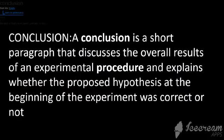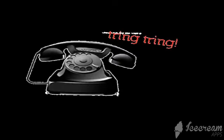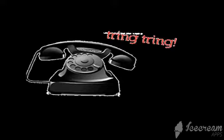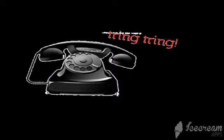The conclusion is the result. A conclusion is a short paragraph that discusses the overall result of an experimental procedure and explains whether the proposed hypothesis at the beginning of the experiment was correct or not. If it's correct, then we have done a law or a theory. But if it's not, don't mind — it's still usable. In science, we never deny something. Then the last step is to communicate your result to other scientists so that they could testify it and do their own observation on it as well.